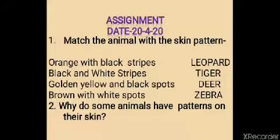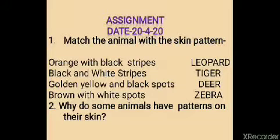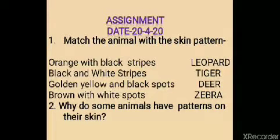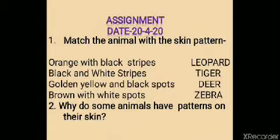So, children, we have learnt that some animals have patterns on their skin due to the presence of hairs of different colors on their body. Now, try to answer the following questions. The first question is: match the animal with the skin pattern. The animals are leopard, tiger, deer and zebra. The skin patterns are: orange with black stripes, black and white stripes, golden yellow and black spots, brown with white spots. The second question is: why do animals have patterns on their skin? Answer these questions and learn the answers with spellings. That's all for today's class. Have a nice day.